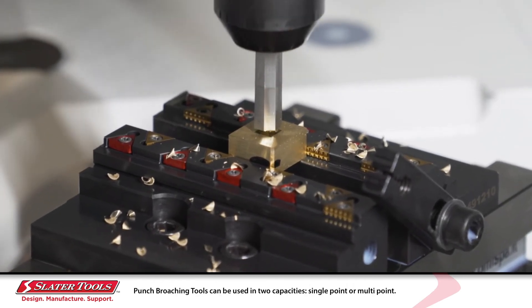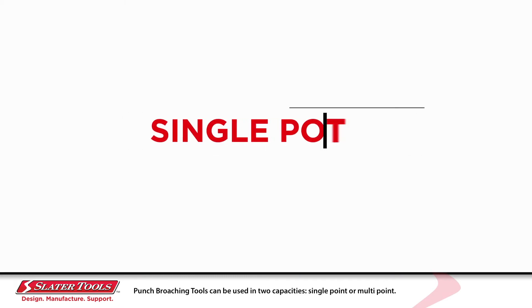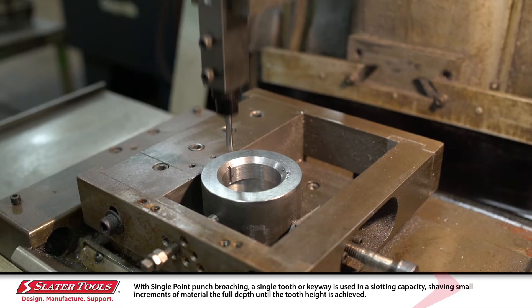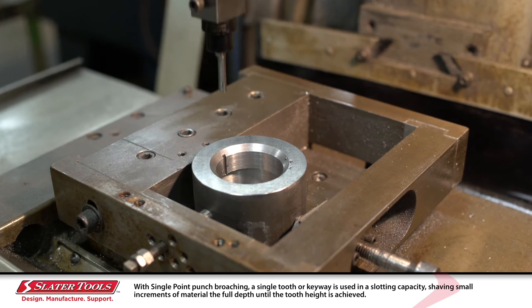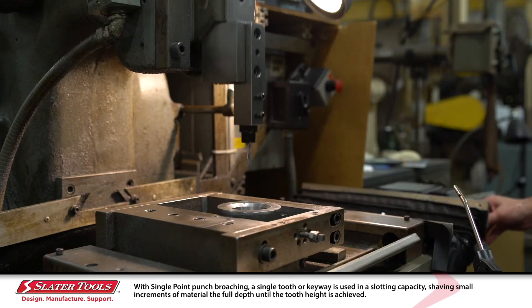Punch broaching tools can be used in two capacities: single point or multi-point. With single point punch broaching, a single tooth or keyway is used in a slotting capacity, shaving small increments of material the full depth until the tooth height is achieved.